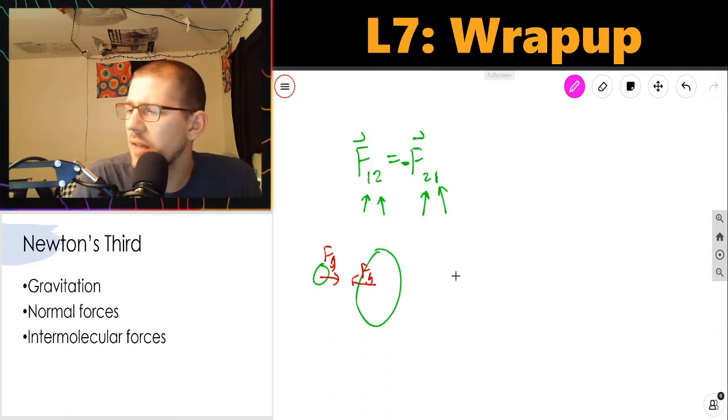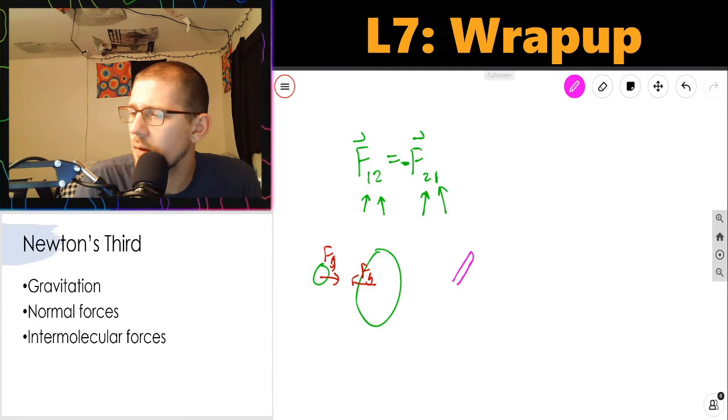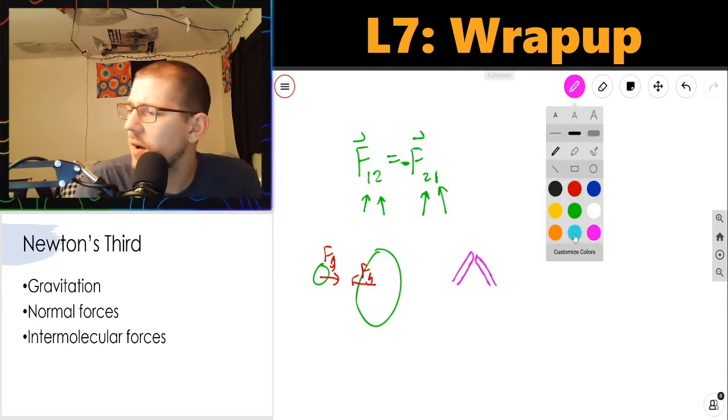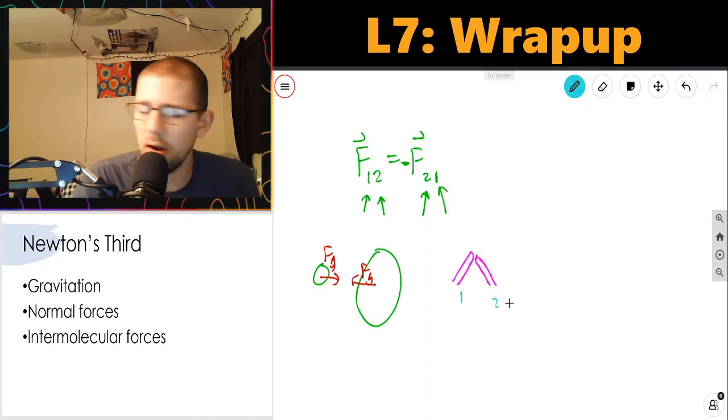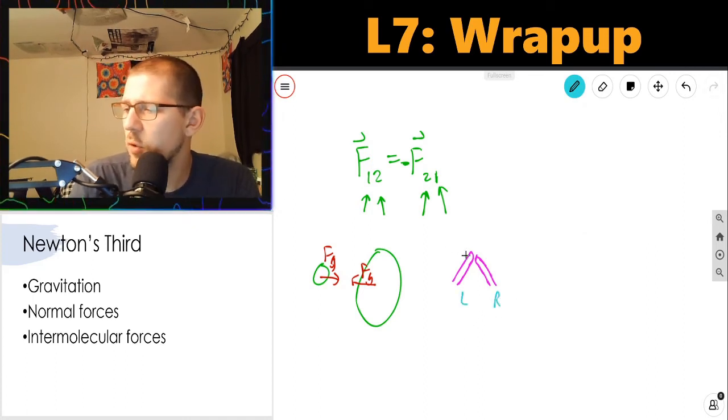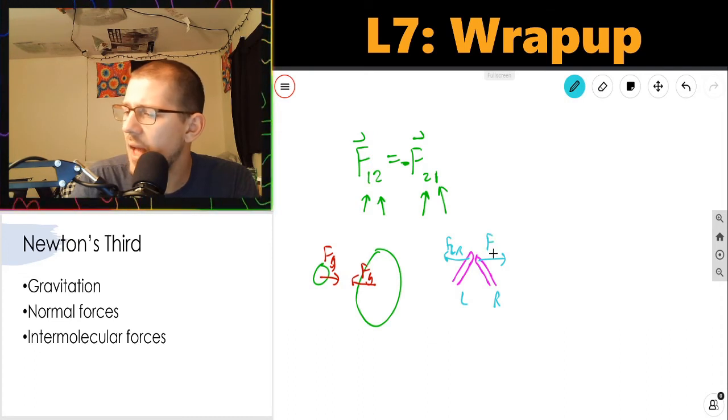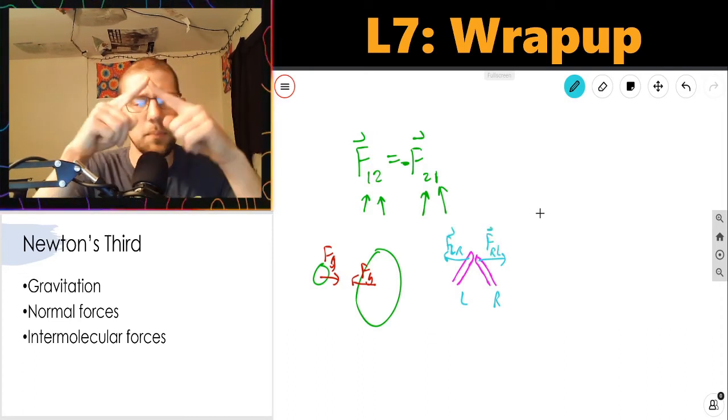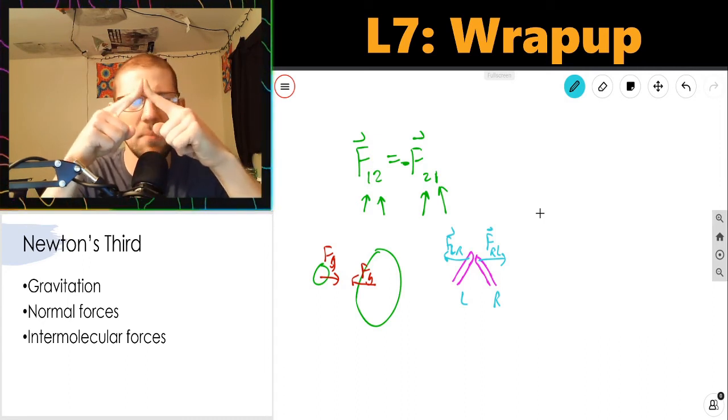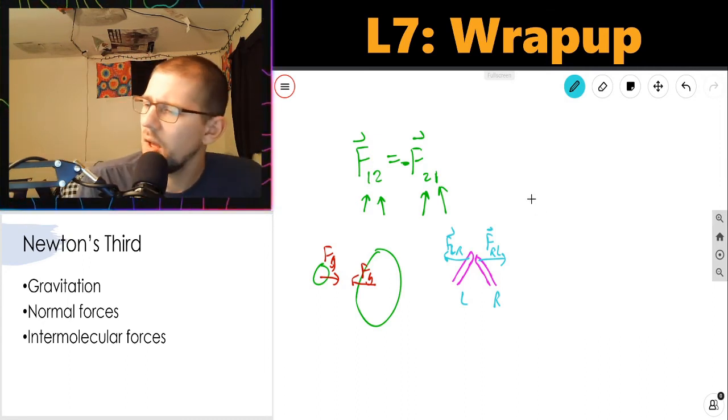In normal forces, say I'm squeezing my two fingers together. Is this a good drawing of fingers? It kind of is. So the force, I'll call them, here's finger one, here's finger two. Let's call them left and right. So the force on my left finger due to my right finger, FLR, is the same in magnitude and opposite direction as the force on my right finger due to my left finger. They push against each other with the same magnitude.